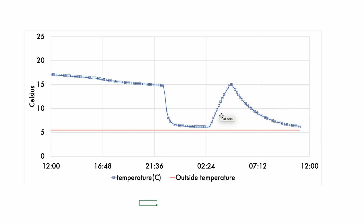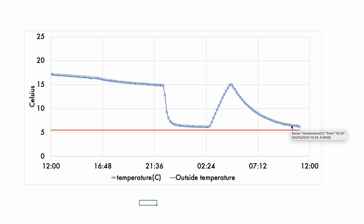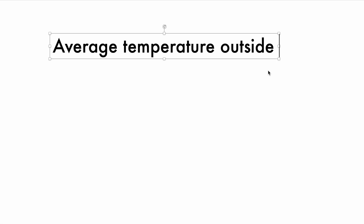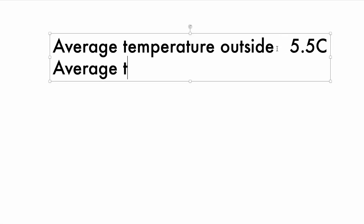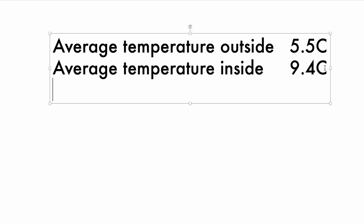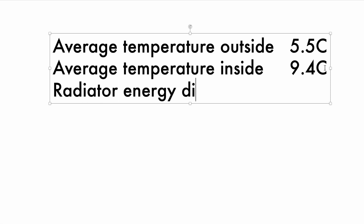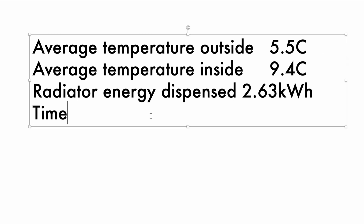All we need to know is how many kilowatt hours were produced by the radiator during the heating period. Key questions: what was the average temperature outside and inside during the observation period between 2:30 in the morning onward; how much energy was delivered by the radiator — remembering that an electric radiator is typically 100% efficient, everything goes into heat; and how long did it take before the temperature went back to its starting point.